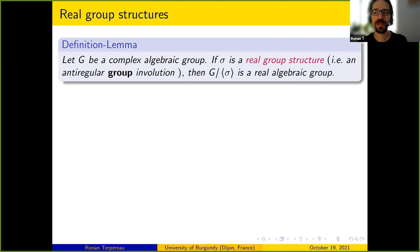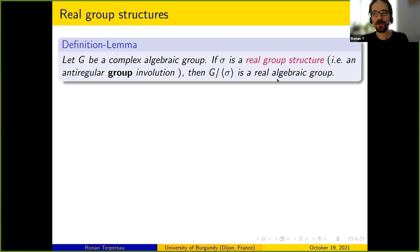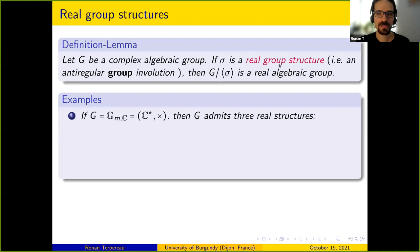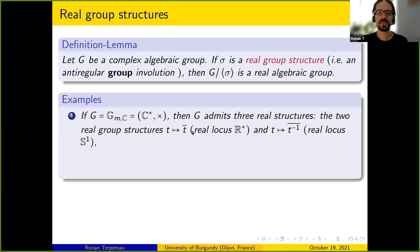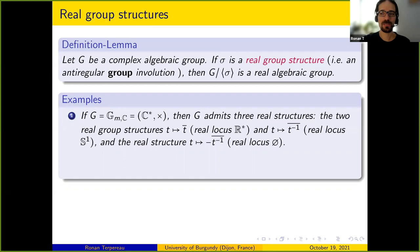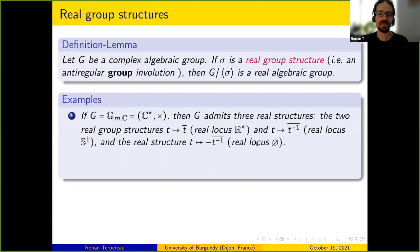For instance, the multiplicative group G_m admits three non-equivalent real structures. There is T ↦ T̄, corresponding to the group G_m(R). There is T ↦ T̄^{-1}, corresponding to the circle S^1 or SO(2,R). But there is a third one, T ↦ -T̄^{-1}, which is not a real group structure — one can check the real locus is empty, and since the identity must be a fixed point, it cannot be a real group structure.